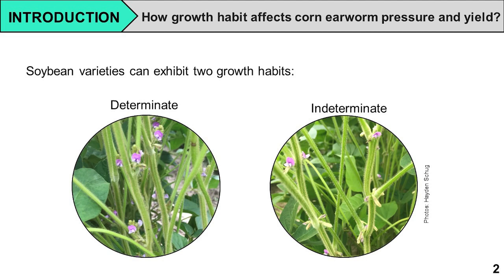One reason we were interested in this question is because we've had pretty big changes in our production system. We've moved from growing a lot of determinate soybeans planted later in the year, to planting a bit earlier with varieties in a more indeterminate growth habit. So we wanted to look at whether we need to change our threshold for corn earworm, because it was based on determinate growth habits back in the 70s and early 80s.